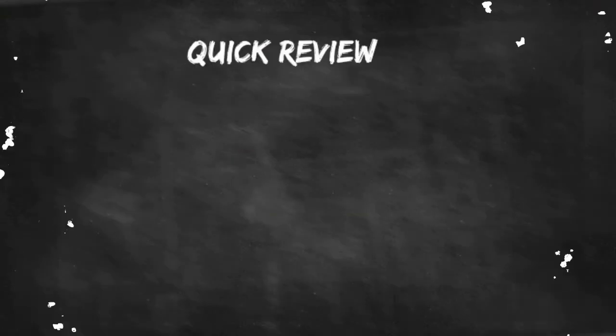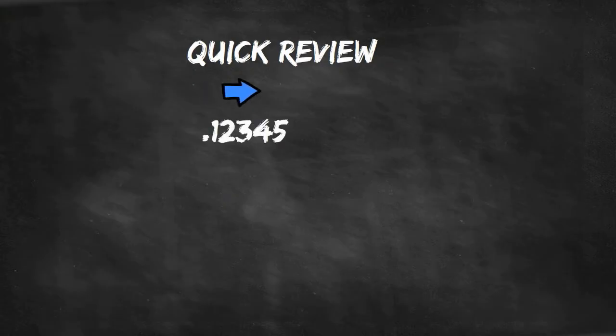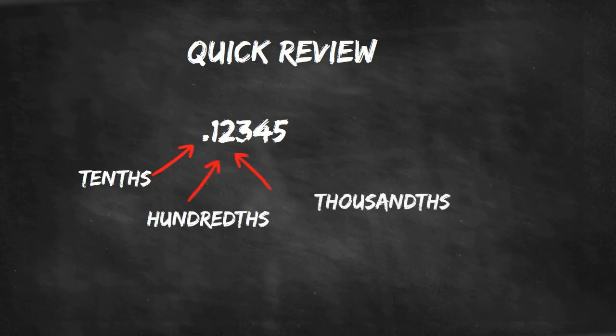A quick review of place value. You read a decimal from left to right. So starting at the left you have tenths, hundredths, thousandths, ten-thousandths, hundred-thousandths.